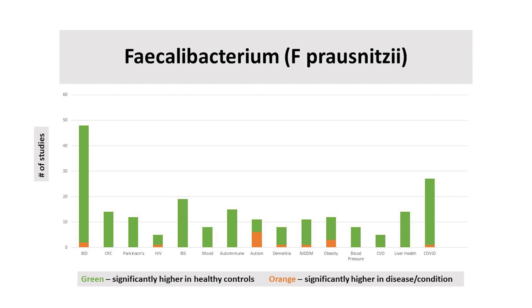Now here's where a skeptic might say correlation does not equal causation. Well, yes and no. Take a look at this chart for Faecalibacterium prausnitzii, the superhero of the gut. F. prausnitzii is consistently and significantly higher in healthy controls — shown in green — as compared to subjects from any given disease state or condition — shown in orange. There is no other taxon in the gut with data like this. It is statistically impossible that this is not a health promoter. It helps when a report highlights the many taxa I've identified over the years down to the genus and species level.